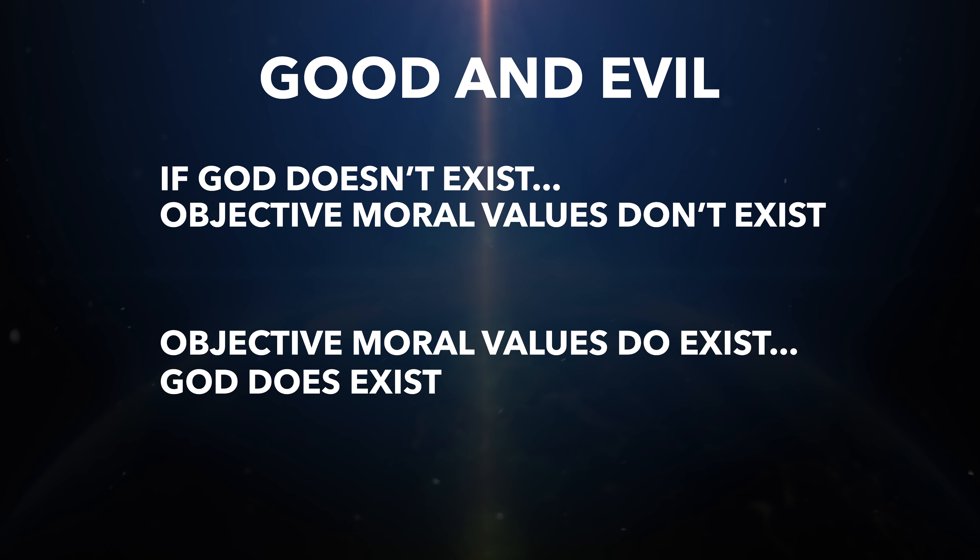The first one, G, is good and evil. The second one in God's name, O, is origins of the universe. And the third, D, is the design of the universe. The first evidence for God's existence is good and evil, or morality.